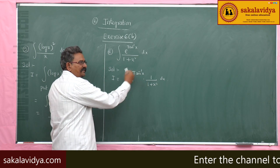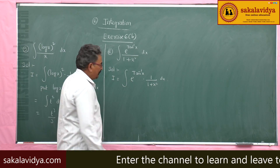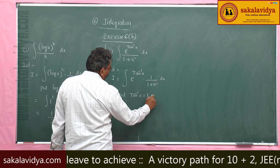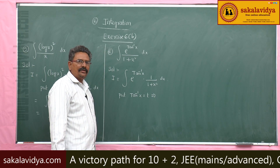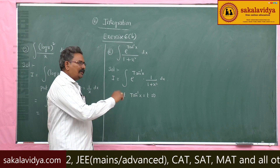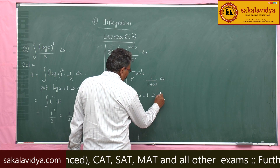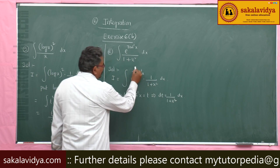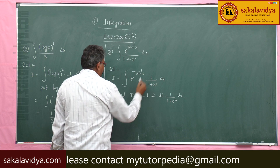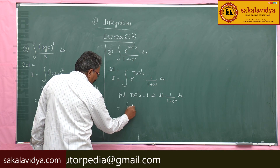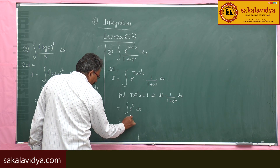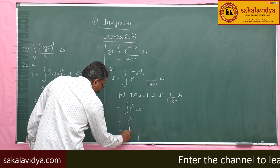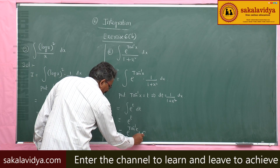Now, put tan⁻¹x equal to t. Then dt/dx equals 1/(1 + x²), so dt becomes 1/(1 + x²) dx. This is replaced by dt and tan⁻¹x is replaced by t, giving the integral of e^t dt, which equals e^t. Since t stands for tan⁻¹x, the answer is e^(tan⁻¹x) plus constant of integration.